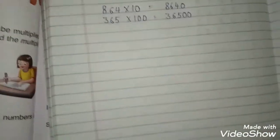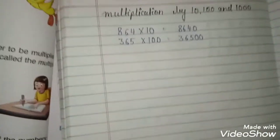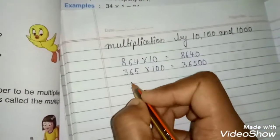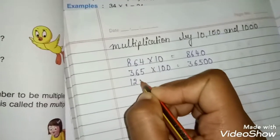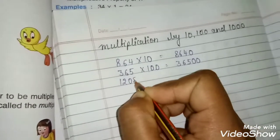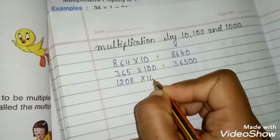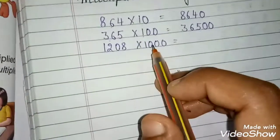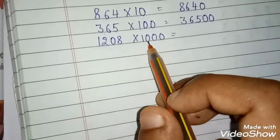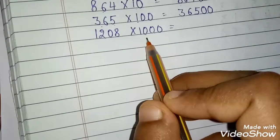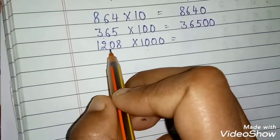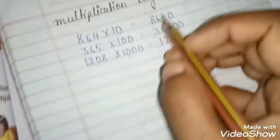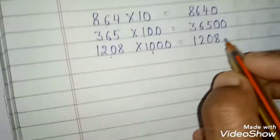Now we will take one example of 1000. 1208 into 1000. First count the number of zeros. So the number of zeros is 3. First you will write the digit as it is. Now you will put three zeros at the right.